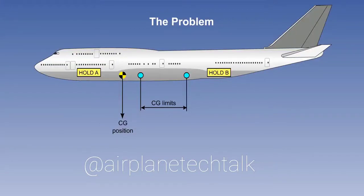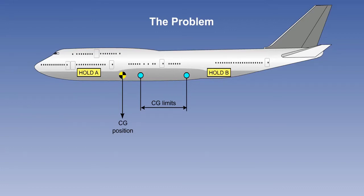If the calculated centre of gravity is found to be out of limits for any part of the flight, it follows that unless the problem is resolved, the aeroplane must not be allowed to depart. To correct the centre of gravity, the load can be adjusted in one of two ways: either by repositioning the mass already on board, such as passengers or freight, or by adding or removing mass.